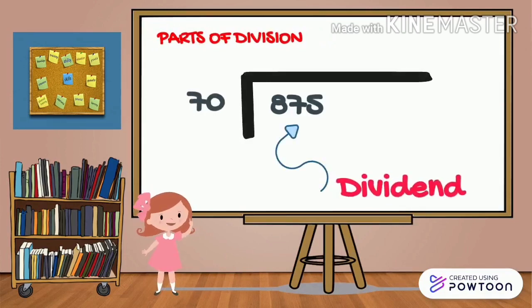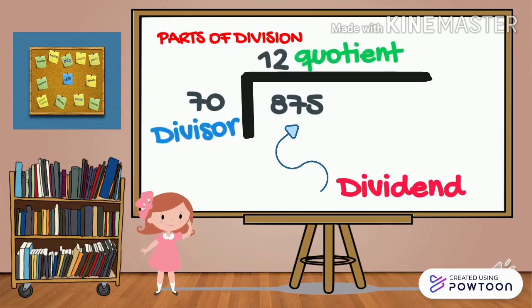So, the number that is inside the division symbol is called the dividend, while the number that divides the dividend is called the divisor. And the result obtained in the division process is called the quotient. The remainder is the portion in the dividend that is left over after the division process.